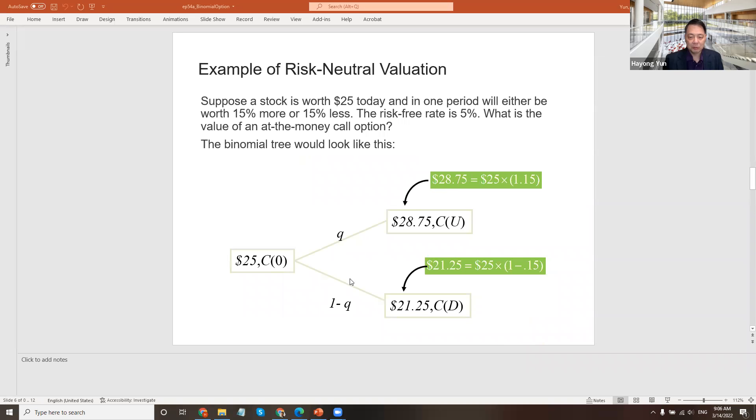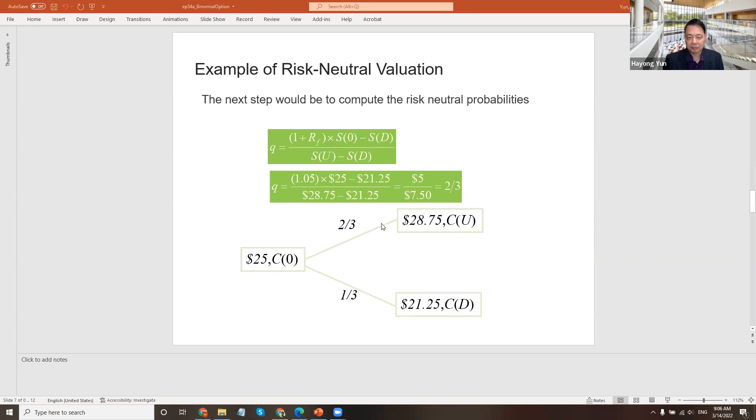Let's look at an example. $25 initially, then $28.75 or $21.25, up or down 15%. What is the risk-neutral probability? With risk-neutral probability Q it goes up, one minus Q it goes down. The risk-neutral probability is: 1.05 times initial stock price minus $21.25, divided by $28.75 minus $21.25, which gets you two-thirds. So Q is two-thirds, meaning 1-Q is one-third. That makes the risky bet of $28.75 and $21.25 discounting by the risk-free rate equivalent to $25.